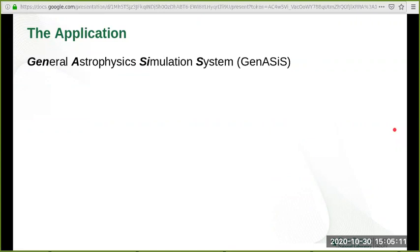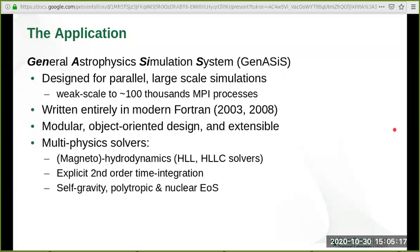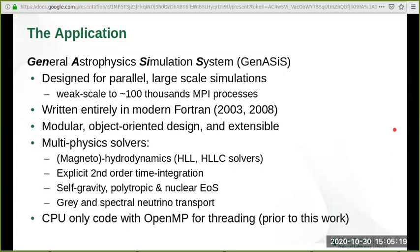A few words about the application we are developing. Genesis stands for General Astrophysics Simulation System, which is an application we designed for parallel large-scale simulation. It has been demonstrated to scale up to 100,000 MPI processes.